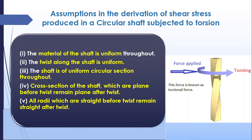Now we are going to derive the equations for torsion. Before any derivation, we have certain assumptions. The assumptions are for the derivation of shear stress produced in a circular shaft subjected to torsion. First, the material of the shaft should be uniform — it should have the same properties from one end to the other. The twist along the shaft should be uniform.